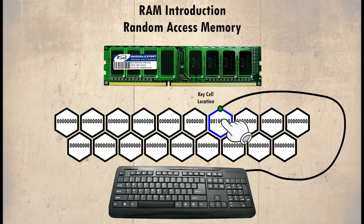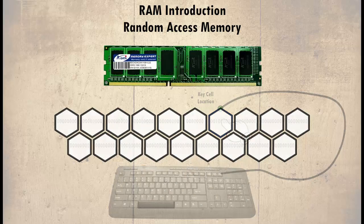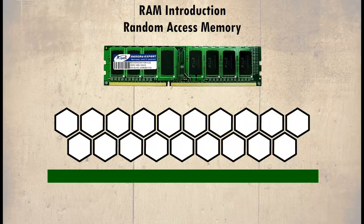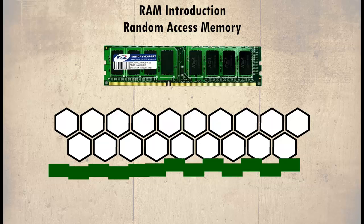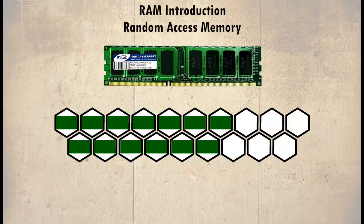To clarify this, let's assume we have a strip of data — setting aside the binary bits for now. In this example, the data is split into smaller sections and saved to each of the cells.